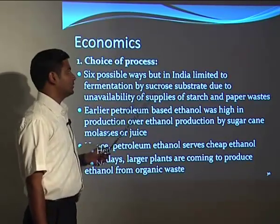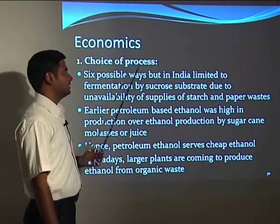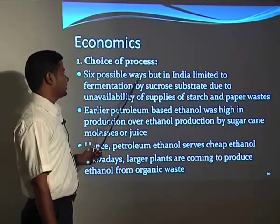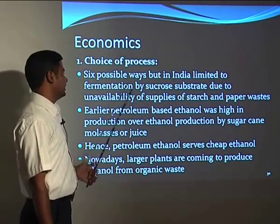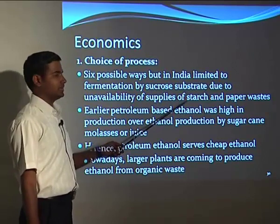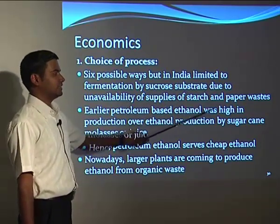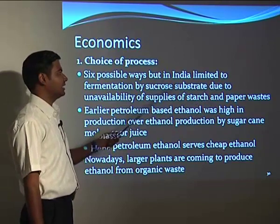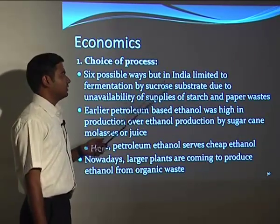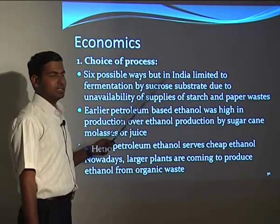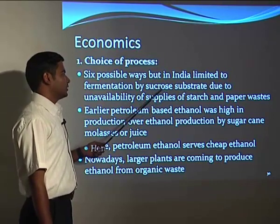Looking at the economics of ethanol production, there were six possible ways of producing ethyl alcohol, but in India it is limited to fermentation by sucrose substrate. Starch and paper waste face many problems in raw material supply, so these are not good ways for ethanol production. We will mainly depend upon sucrose substrates — that is, sugarcane juice or other similar materials to produce ethanol.